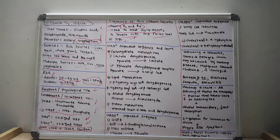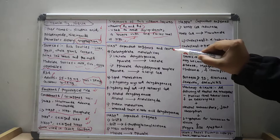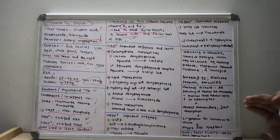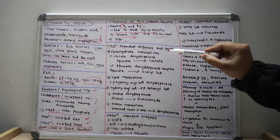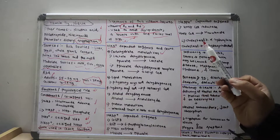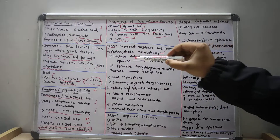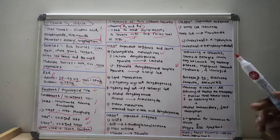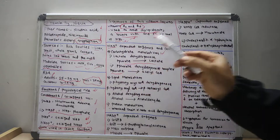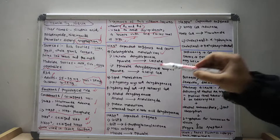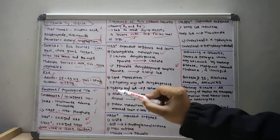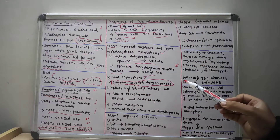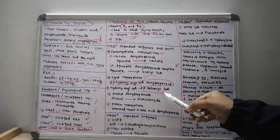Now let us discuss the NAD plus dependent enzymes and reactions. In carbohydrate metabolism, lactate dehydrogenase requires NAD plus when changing pyruvate into lactate. The pyruvate dehydrogenase complex also requires NAD plus to change pyruvate to acetyl coenzyme A. In lipid metabolism, beta-hydroxyacyl coenzyme A dehydrogenase requires NAD plus, changing beta-hydroxyacyl coenzyme A to beta-ketoacyl coenzyme A.